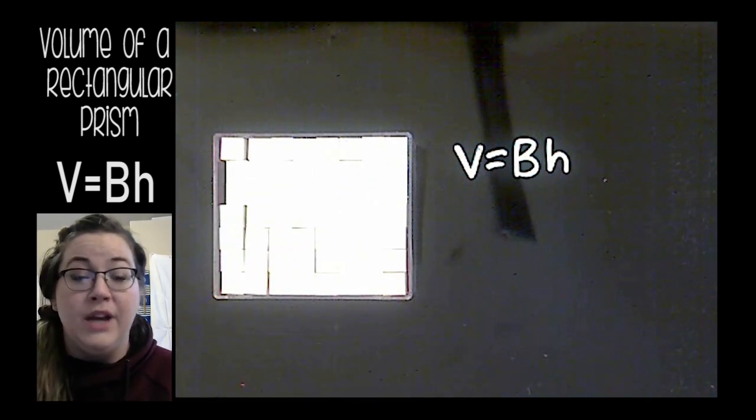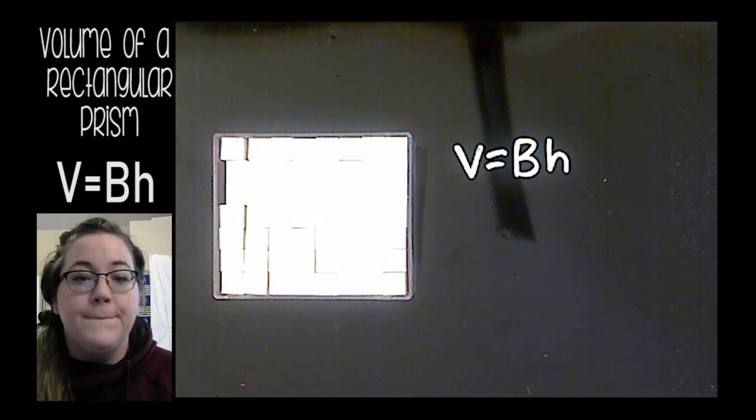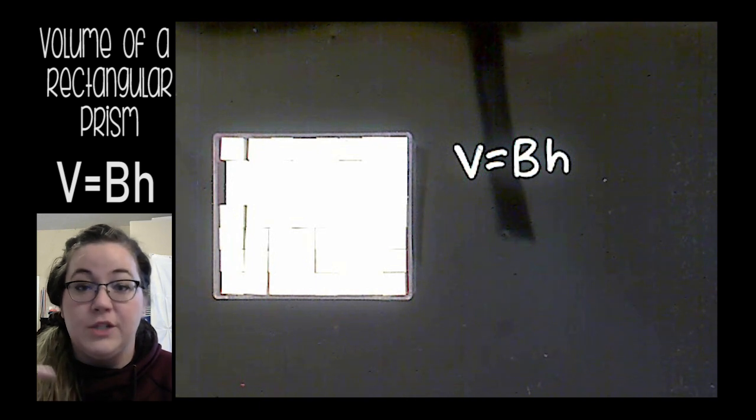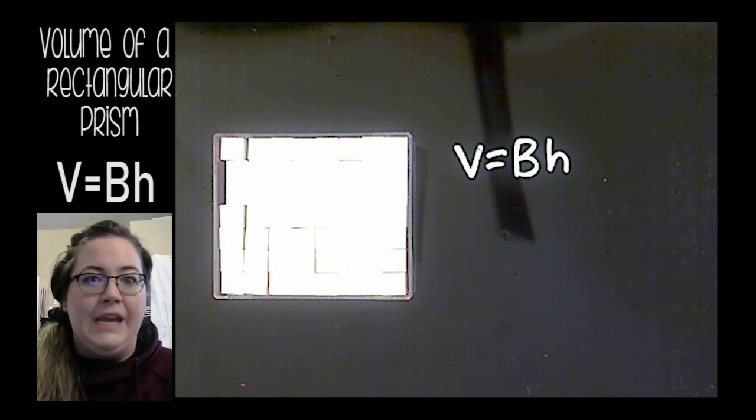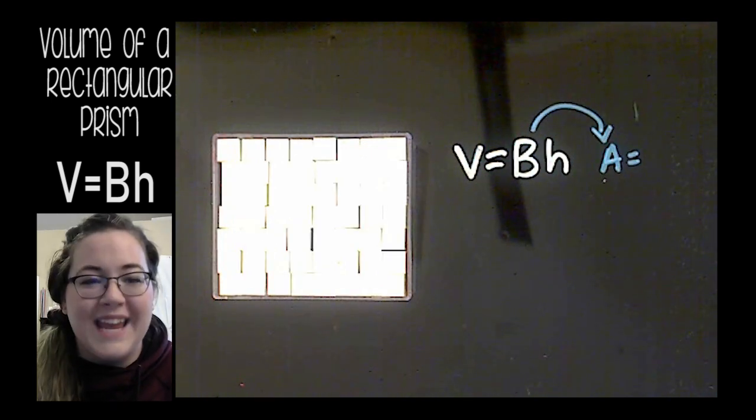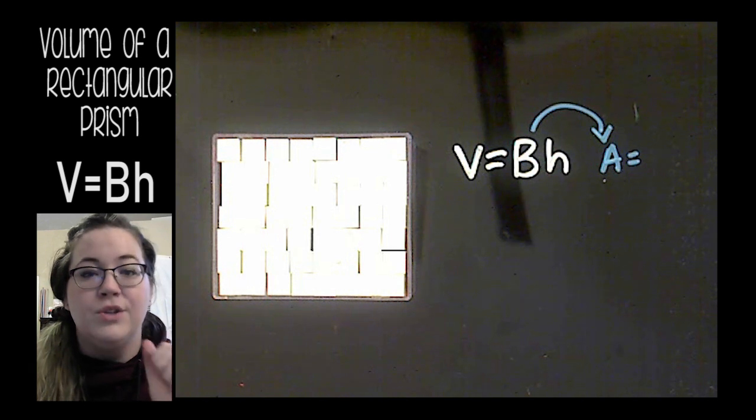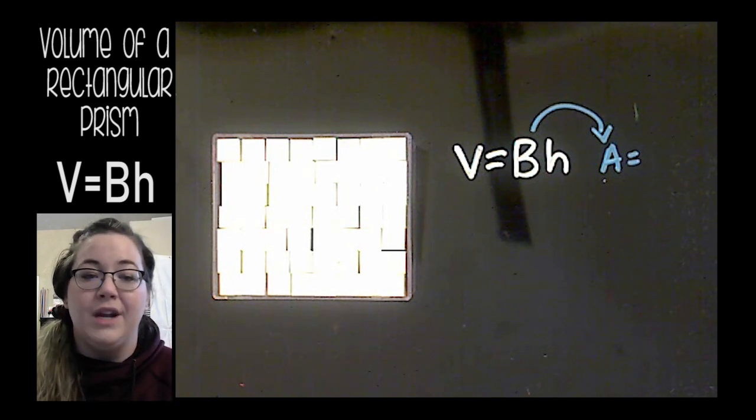I know we already know that our area of the base is 56 for this case, but I'm going to actually solve it. I like to organize my thoughts a little bit, so I always draw an arrow for that capital B and write A equals for the area. So a rectangular prism has a rectangular base, so the area that we're looking for right now is going to be the area of that rectangle.